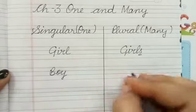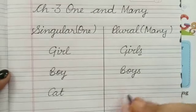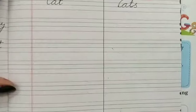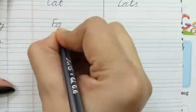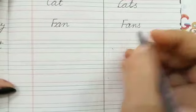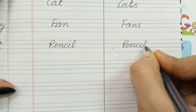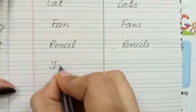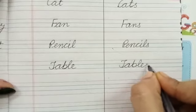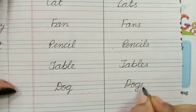Boy — boys. Cat — cats. Pencil — pencils. Table — tables. Dog — dogs.